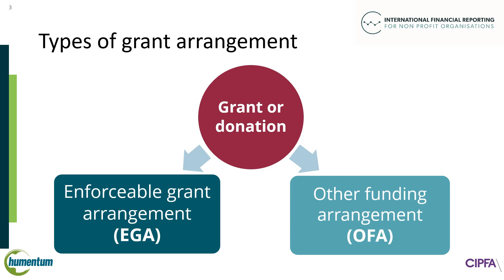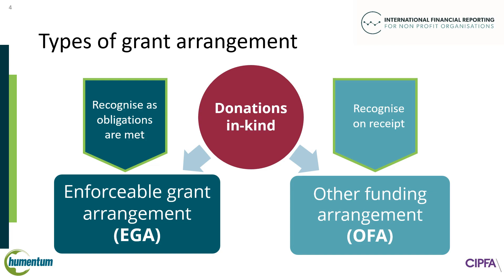Non-profit organizations may receive revenue from grants and donations. In INPAG, these are classified as either an Enforceable Grant Arrangement, an EGA, or an Other Funding Arrangement, an OFA. This is explained further in the Common Model video. NPOs may also receive goods or services that are donated in kind. The principles for revenue recognition that apply to cash revenue also apply to donations in kind. For OFAs, donations in kind are recognized on receipt. For EGAs, revenue is recognized as enforceable grant obligations are met.